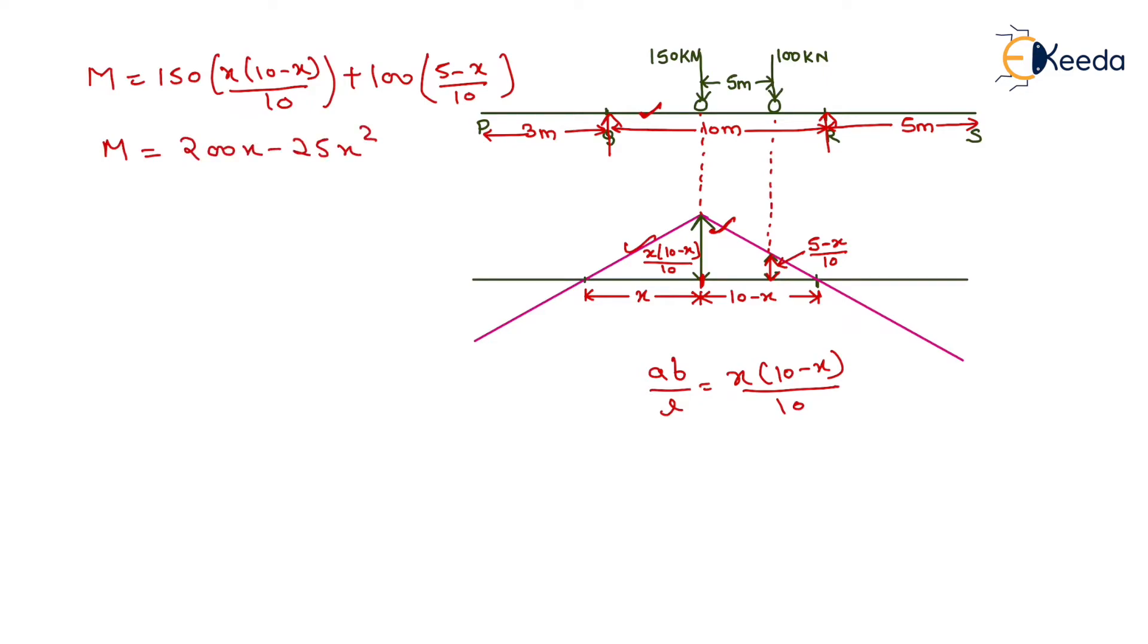For the determination of maximum moment, we differentiate this equation with respect to X. So dM/dX = 200 - 50X. If we equate this value with 0, we get the point where the maximum moment will lie. Setting dM/dX = 0, we get 200 - 50X = 0, and X = 4 meters.